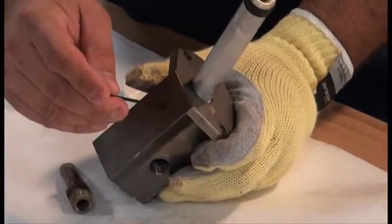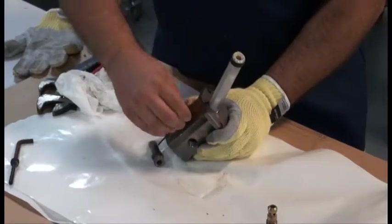Tighten the 4mm set screw using a 2mm hex wrench to lock the seat tube into position.